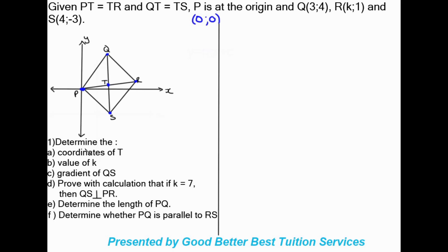Let's look at what they're asking us to find. Number one, part A: determine the coordinates of T. T is in the middle. They gave us the information that QT is equal to TS, so if these two sides are equal on either side of T, that means T is the midpoint. So we are clearly working out the midpoint here. We're finding the midpoint of QS because the midpoint of QS is T.